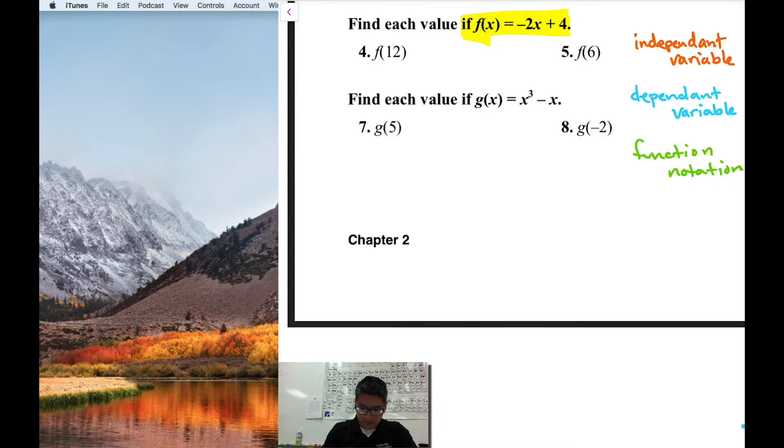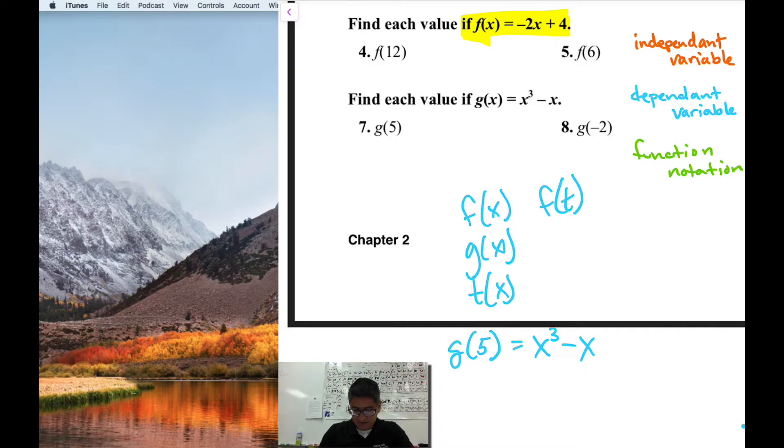Okay, so if you're counting, that's two. We have two more to go. Let's work out number seven, g of 5. Now notice, it's g of 5. Before it was f of, right? It can be any letter. It can be f of x, function of x, it can be g of x, it can be t of x, it can be f of t. It all means the same thing. It means it's a function of whatever is inside the parentheses.